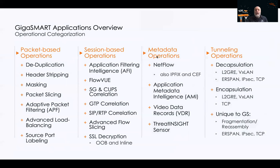Let's move on to looking at the GigaSmart applications themselves. From an operational categorization perspective, we can look at all the features available in GigaSmart and think of them in terms of what they do operationally. Is it just a packet-based operation? Is it session-based? Is it generating metadata? Or is it just there for tunneling purposes? A lot of the packet-based operations are basic things we've had support for a very long time. The areas with the most development tend to be in the session-based and metadata generation areas.